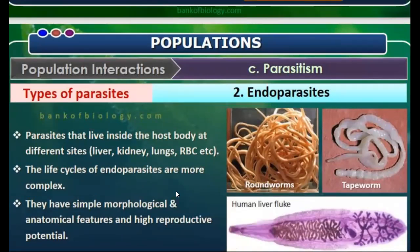Next are endoparasites — parasites that live inside the host body at different sites such as the liver, kidney, lungs, and RBC. The life cycle of endoparasites is more complex. They have simple morphological and anatomical features but high reproductive potential.